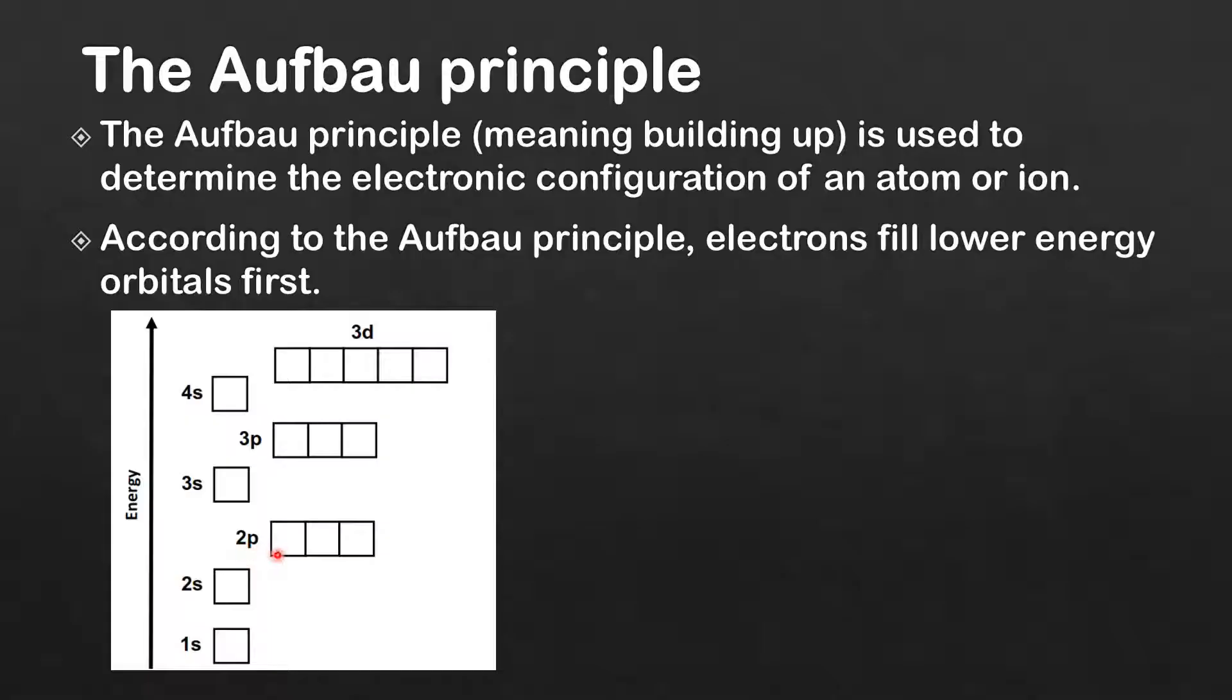The 2p are degenerate orbitals, which means they all have the same energy. Then moving on to the 3s orbital, then the 3p orbitals, which are degenerate orbitals all having the same energy, then next is the 4s orbital.